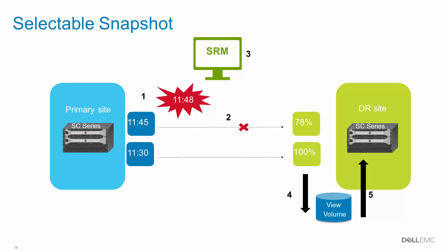On a per-volume basis, Selectable Snapshot allows the SRM administrator to control the behavior of the storage mounted at the DR site when an SRM recovery plan is executed. In some cases this may be a view volume from a replicated snapshot; in other cases, it may be a volume replica from a synchronous replication. The Selectable Snapshot feature is built into and configured in Dell Storage Manager.